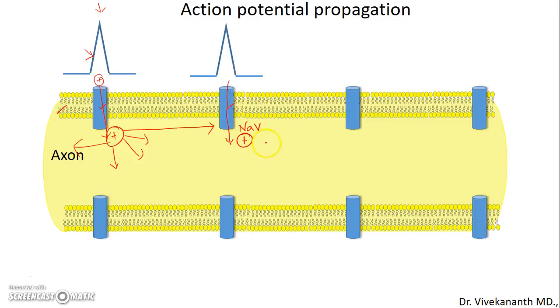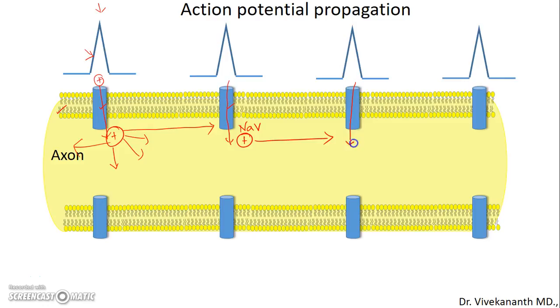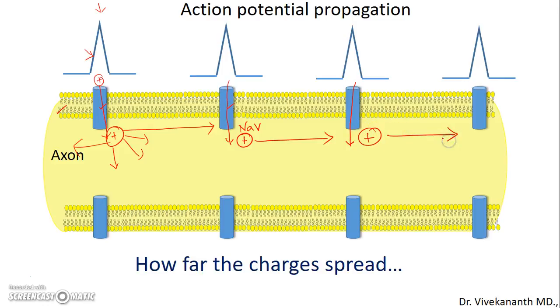Positive ions are moving inside again. This cycle repeats — the spreading of the charges and the opening of ion channels — and that is basically how the action potential propagates in the membrane.